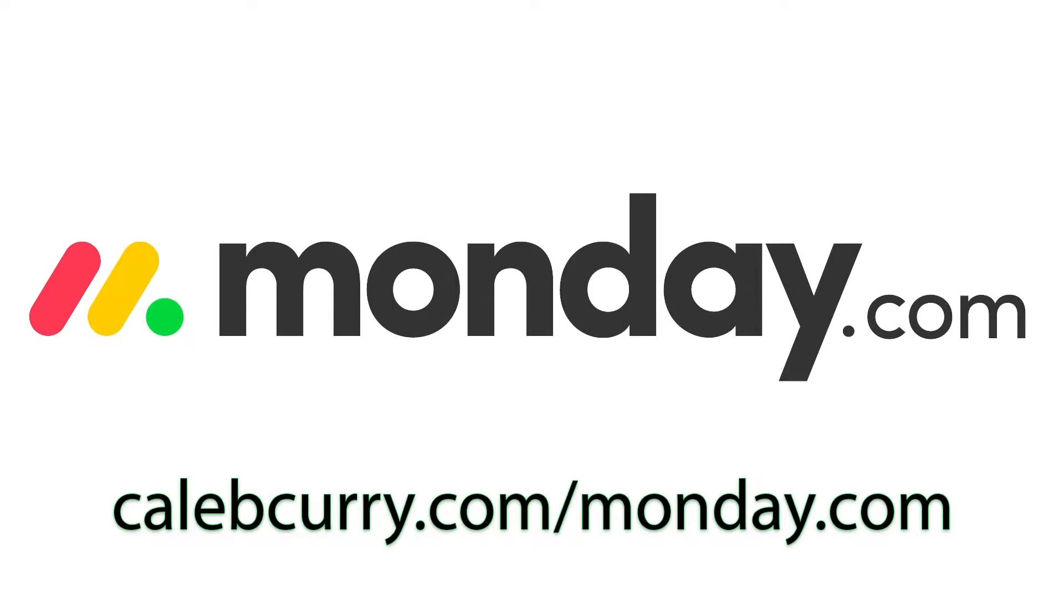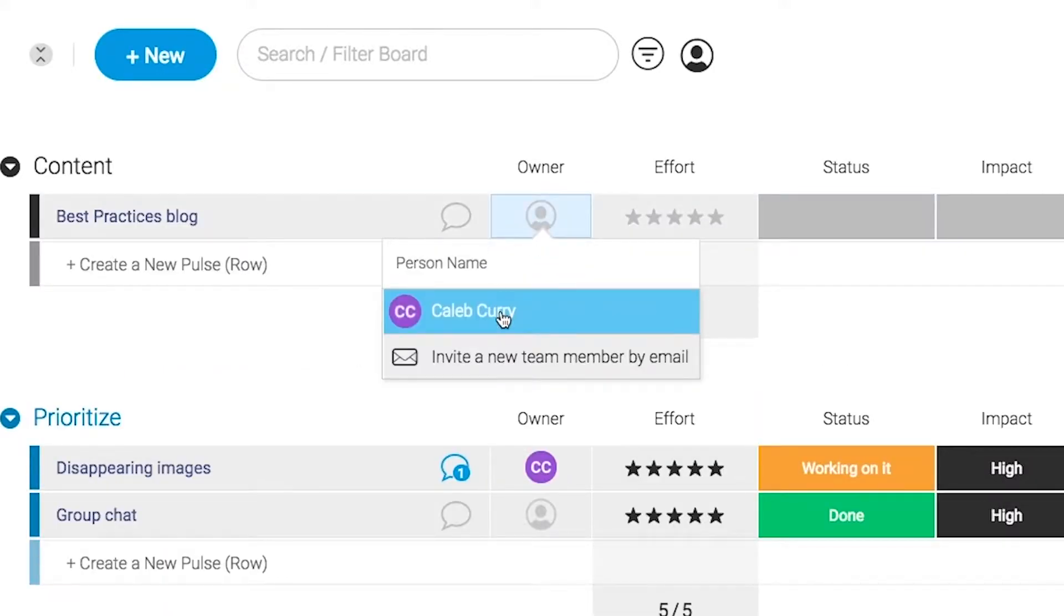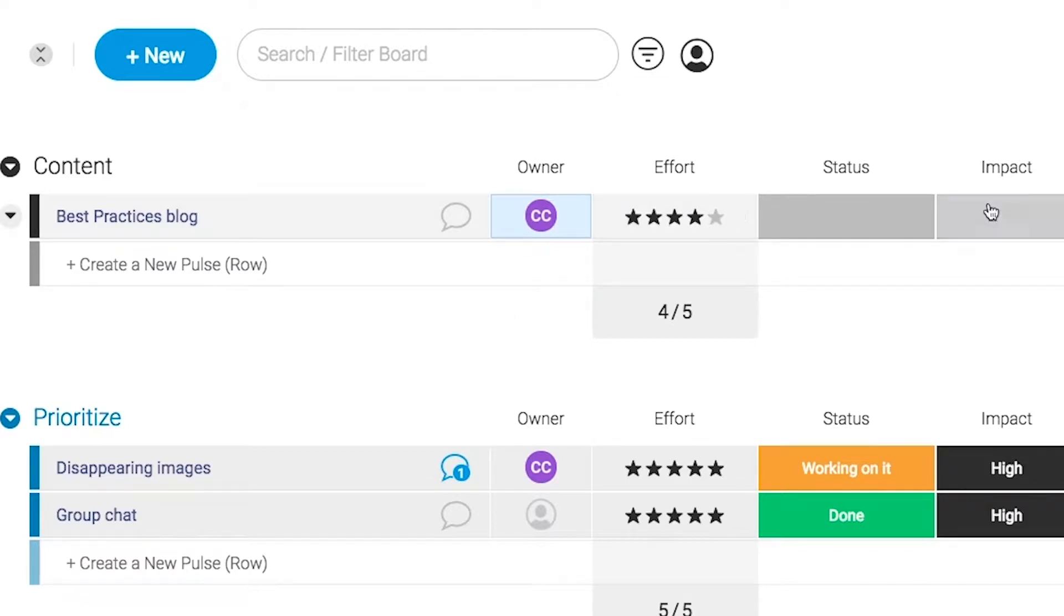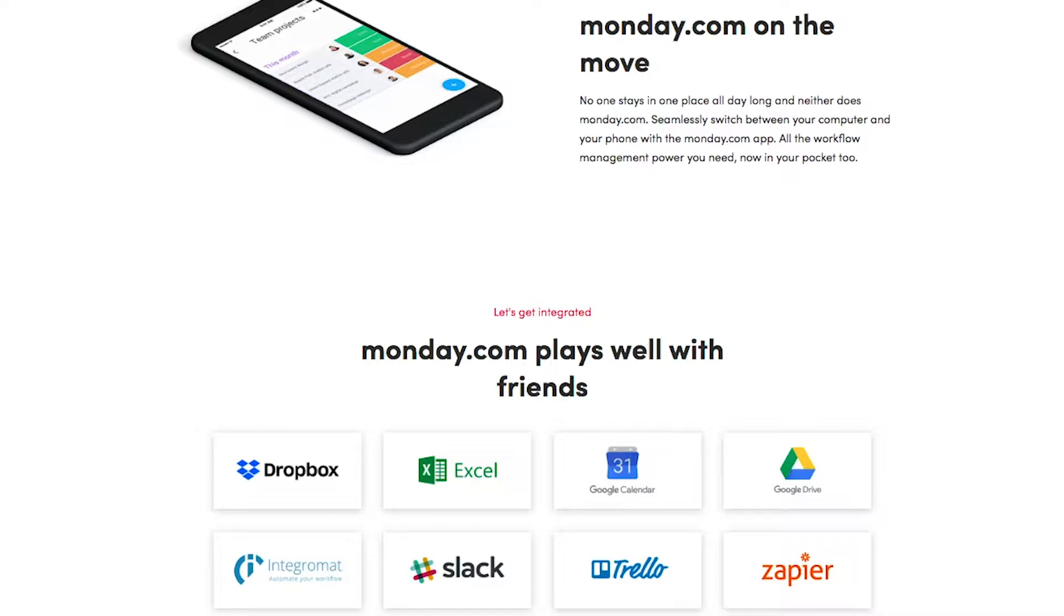Monday.com is your visual project management solution. This is the tool that allows you to see where every task or project stands with a single glance. With a fully customizable interface, you can create the exact workflow that you need for you and your team to get stuff done. Monday.com is available on mobile and integrates well with some of the most popular tools out there. So get your life in order by giving it a try for free. Link in the description.